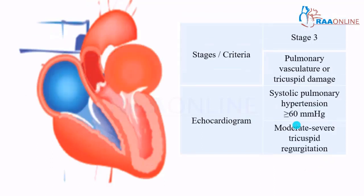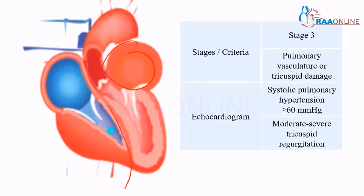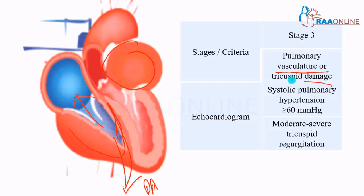Coming to Stage 3. Here the back pressure from the LA is reflected on the pulmonary circulation, so your right ventricle is also affected. There is pulmonary vascular damage and tricuspid regurgitation can happen. Your pulmonary artery pressure is greater than 60 mmHg and there is moderate to severe TR. This is Stage 3.